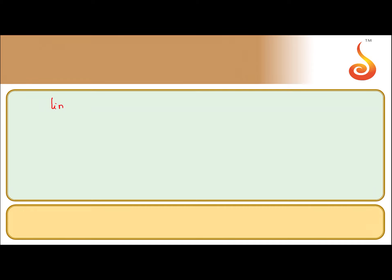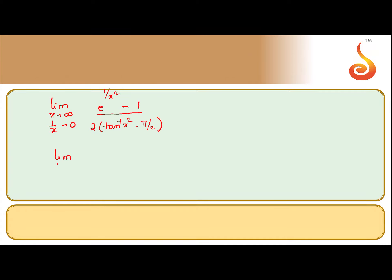So let us do this. This is limit extending to infinity, so 1/x is tending to 0. We have e to the power 1/x² minus 1, divided by — we take 2 common — so we get tan inverse x² minus pi by 2.